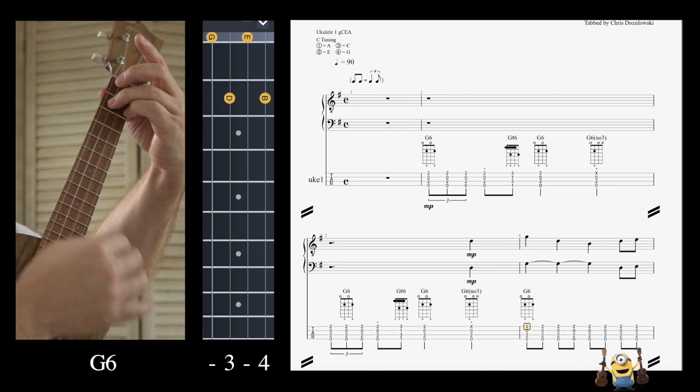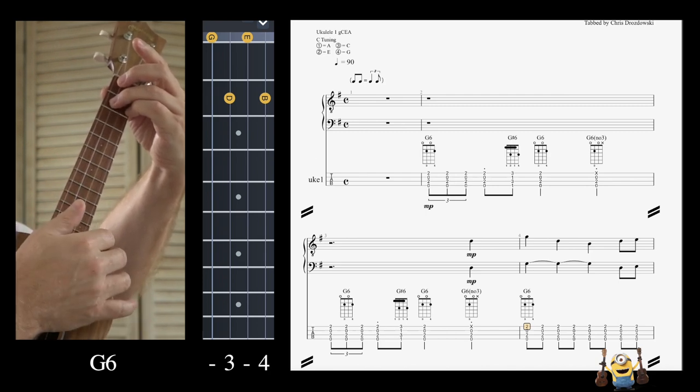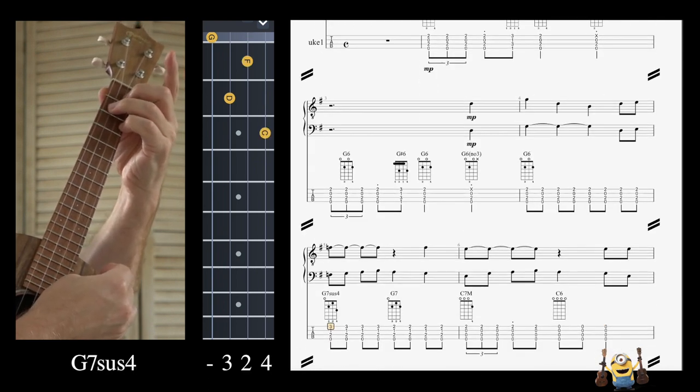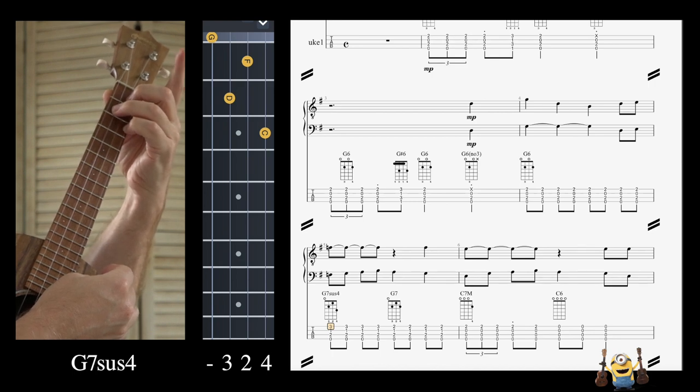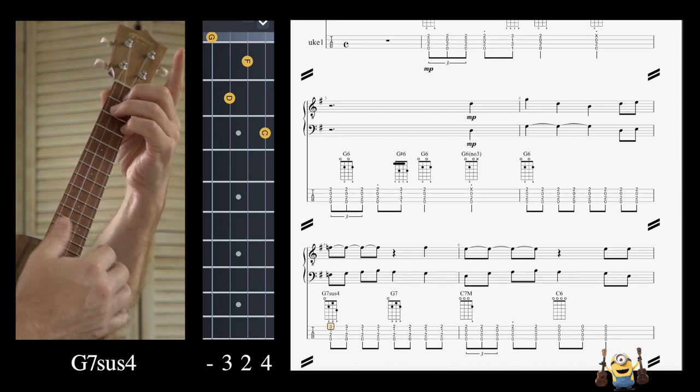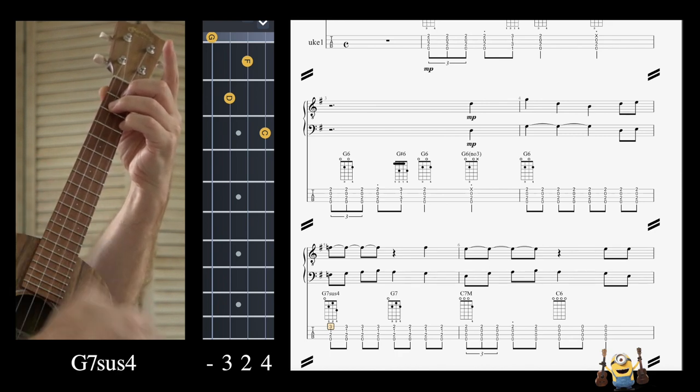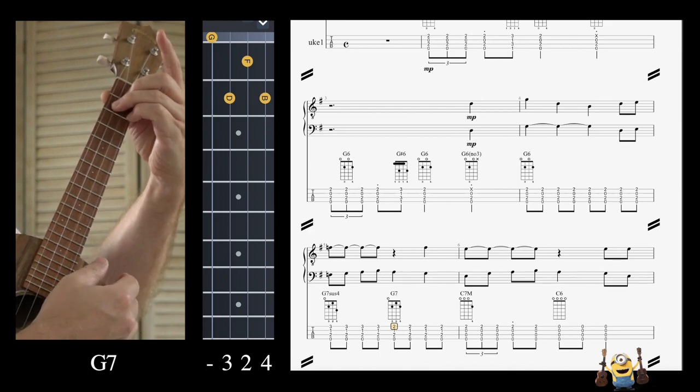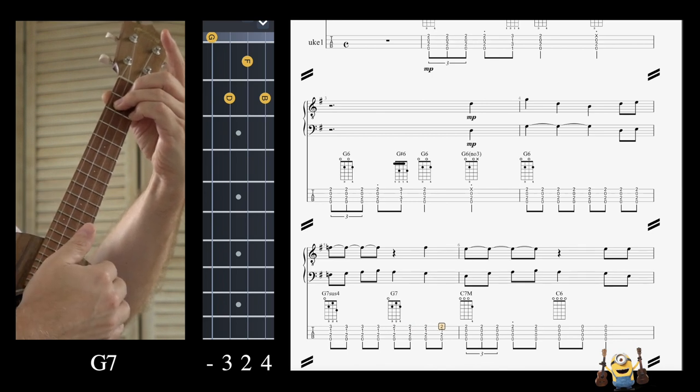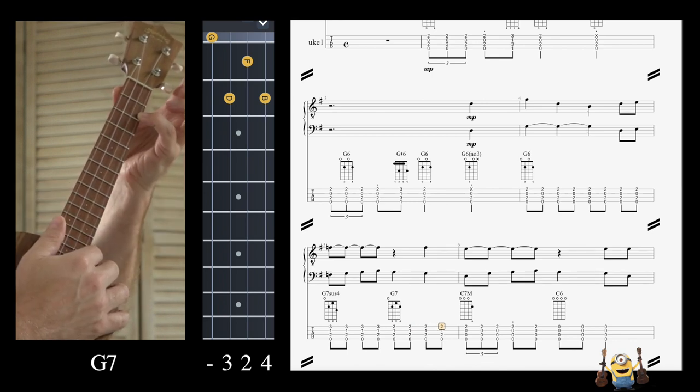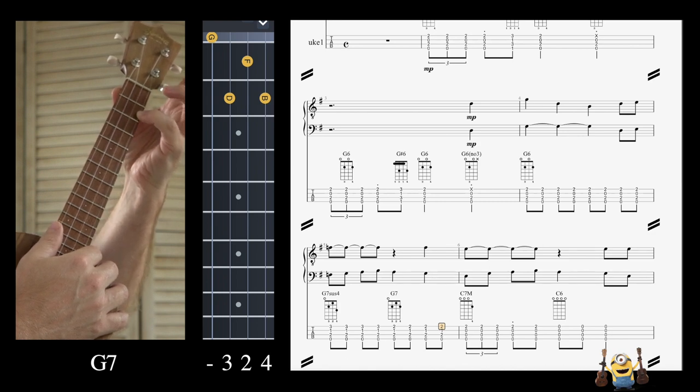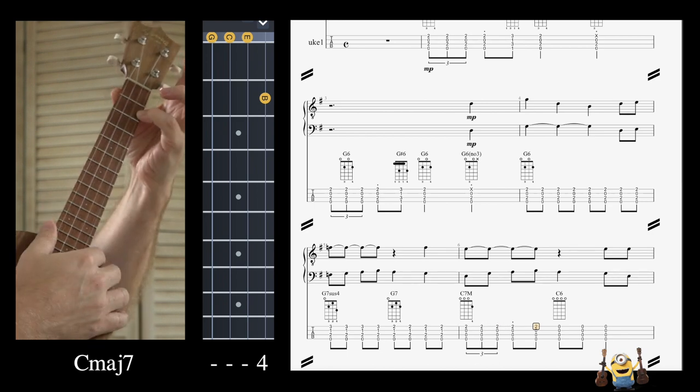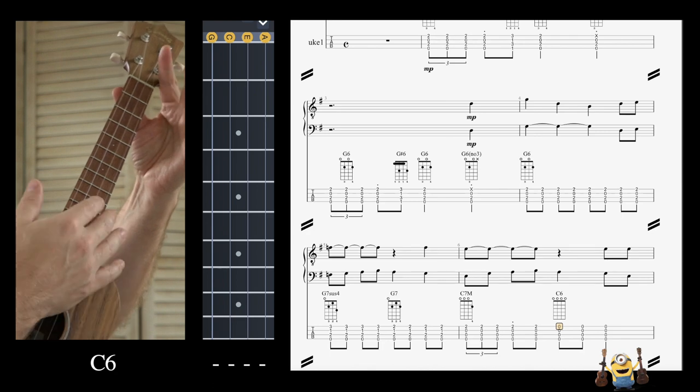Starting with that G6 again, same fingering. Nice easy strum. And then you're already there for the C major seven. Just keep the pinky on there, and that's a triplet. And then let go.